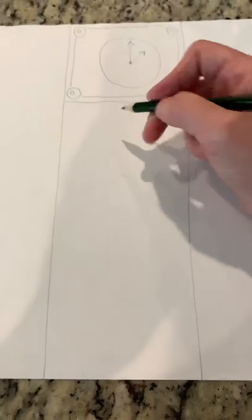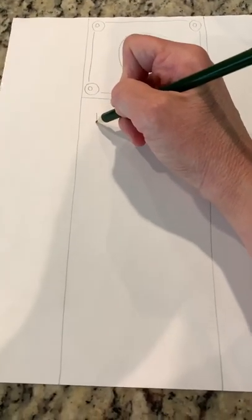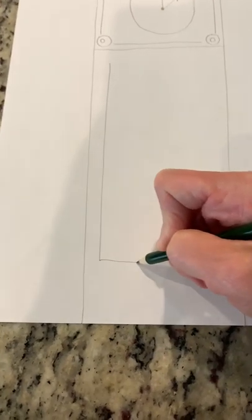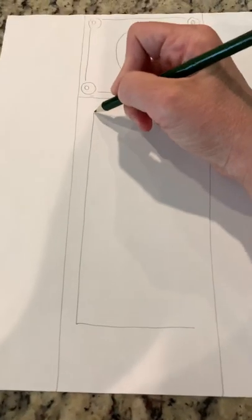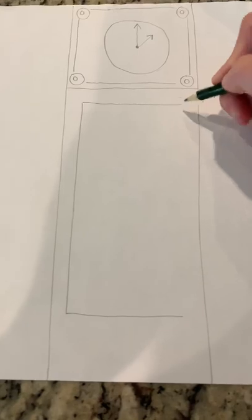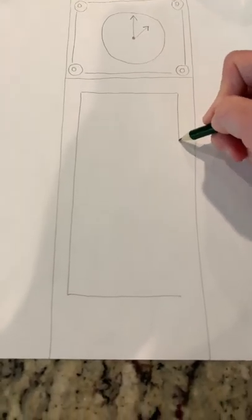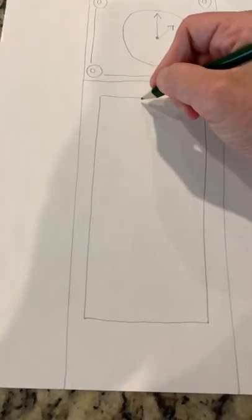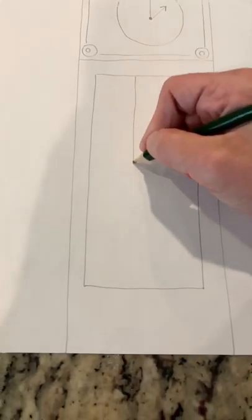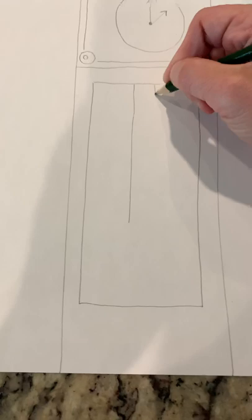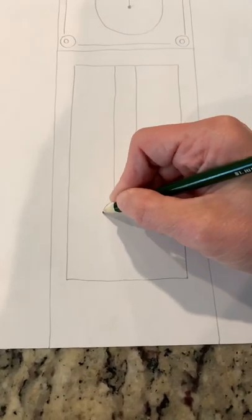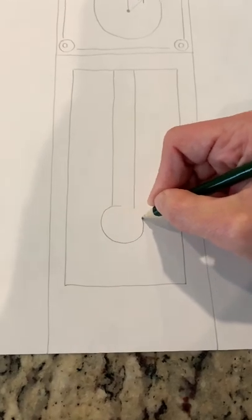We need to do a window. We're gonna do a long line like this, come across, and then bring that across. We're putting a rectangle inside a rectangle. Then we're gonna draw two lines that go down like this and stop, and then we're gonna put a circle at the bottom.